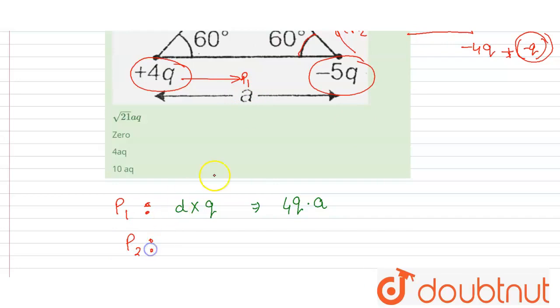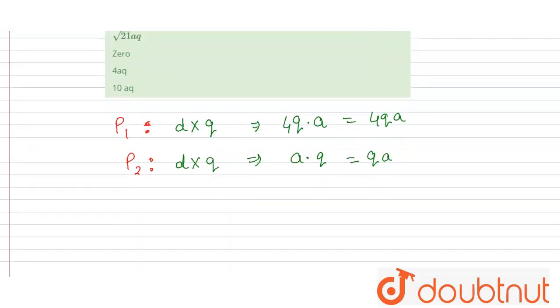For the p2, dipole moment p2 will be equal to distance into charge and it will be distance is a and charge is q, so it will be qa. And this will be equal to 4qa.